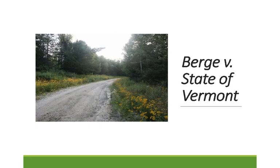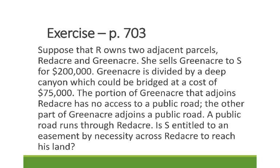We're going to start by discussing an exercise on page 703 that reviews some concepts covered previously. Suppose that R owns two adjacent parcels, Red Acre and Green Acre. She sells Green Acre to S for $200,000. Green Acre is divided by a deep canyon, which could be bridged at a cost of $75,000. The portion of Green Acre that adjoins Red Acre has no access to a public road, while the other part of Green Acre adjoins a public road. A public road also runs through Red Acre.